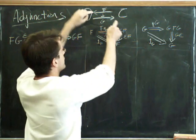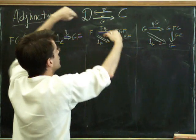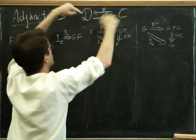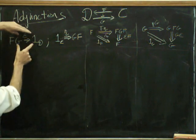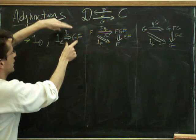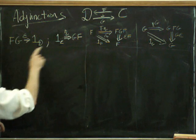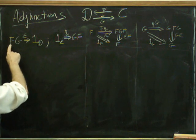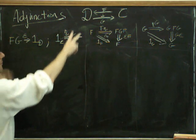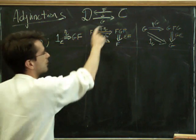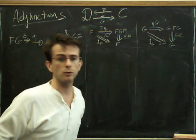So, two categories, functors going between them. We say F is left adjoint to G if we have an epsilon and an eta, so going in these directions. So F and G is not symmetric in F and G, remember F is the left adjoint. And we've got to satisfy these two triangle inequalities.